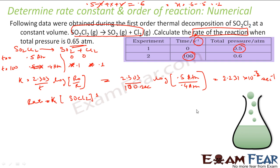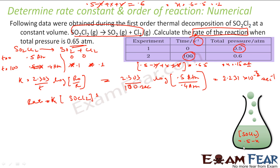Setting up: (0.5−X) + X + X = total pressure = 0.65 atm. Solving: X = 0.15 atm. Therefore the concentration of SO2Cl2 = 0.5 − X = 0.5 − 0.15 = 0.35 atm.